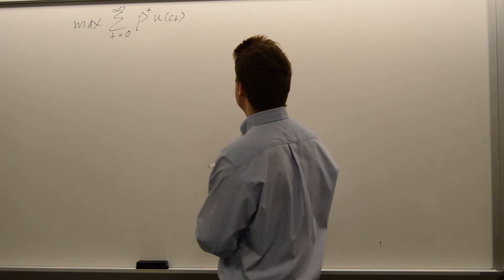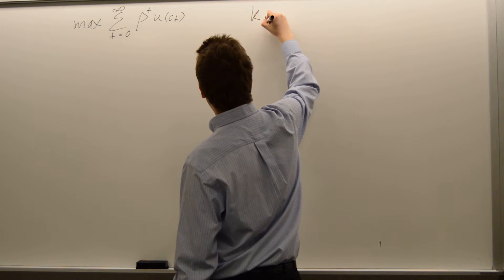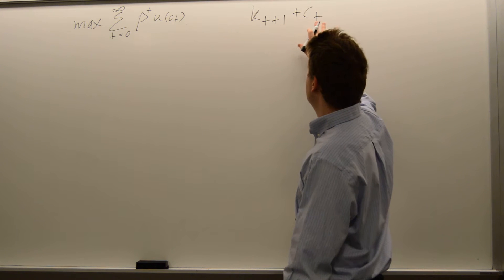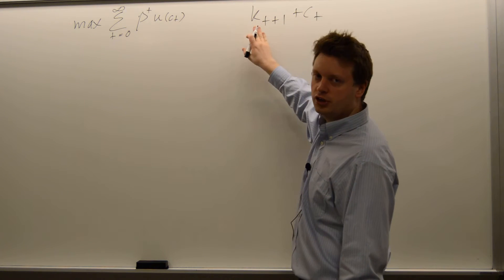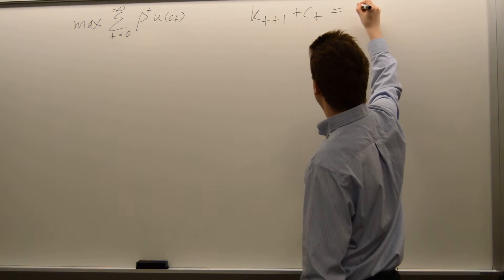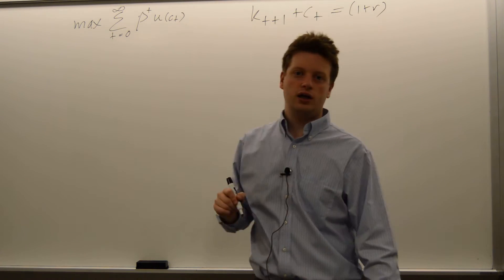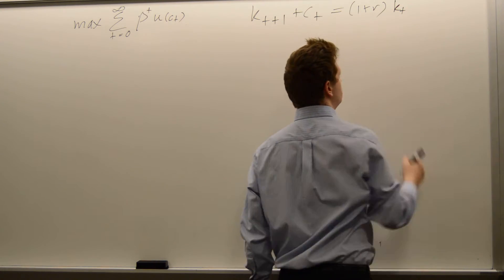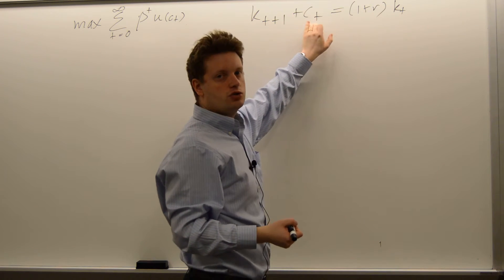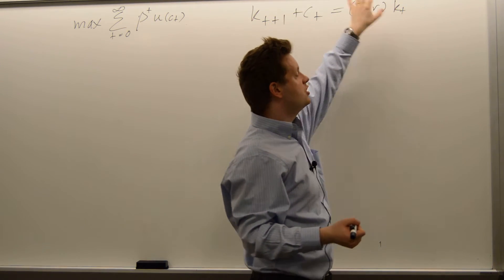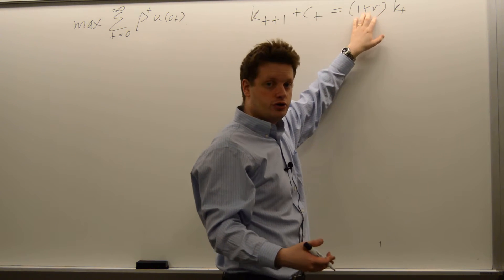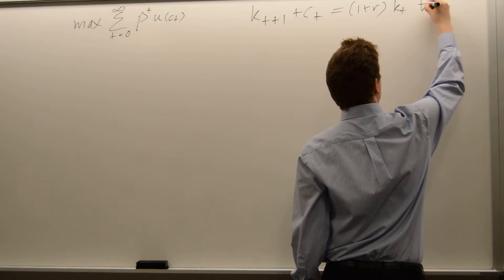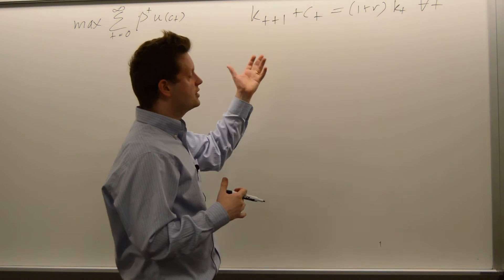Let's add a constraint. Let's assume that you have capital. So whatever you have today, you can either consume or you can invest it. If you invest it, you get a return, and today you actually have what you invested yesterday. So kt — yesterday you chose ct minus 1 and kt, and today you got kt because that's what you invested. You get some positive return and this you can now either consume or invest again. This equation has to hold for all t. Now we can maximize this using the Lagrangian method.